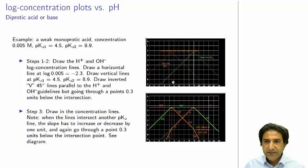We draw the vertical lines at the pKa1 and pKa2, 4.5 in this case, and pKa2 at 8.9. We draw the inverted Vs here, in orange and here in green. And then we start drawing the concentration lines. The concentration lines are drawn in the second part here.